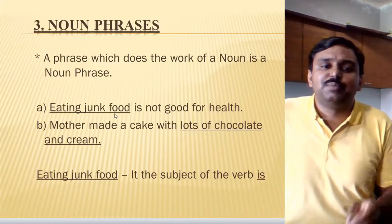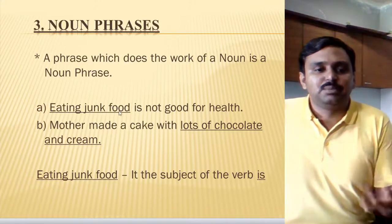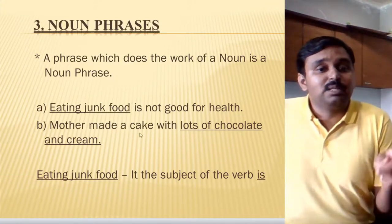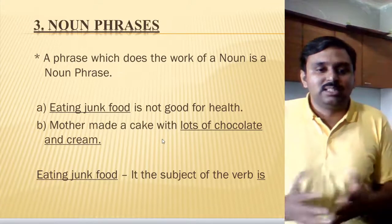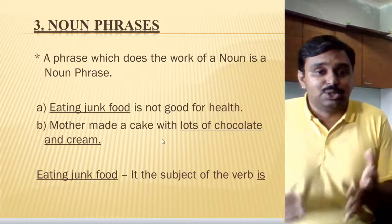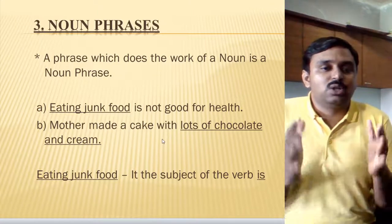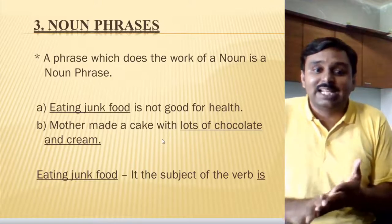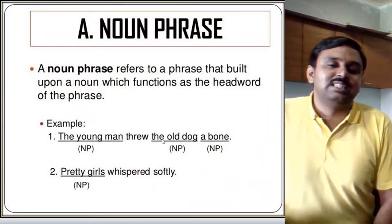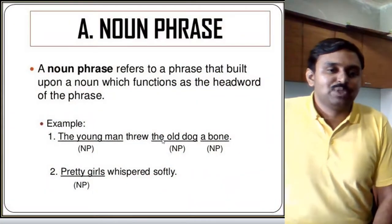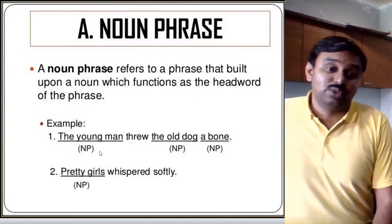Another example: 'Mother made a cake with lots of chocolate and cream.' Here chocolate and cream are both nouns, so 'with lots of chocolate and cream' is not describing an action or adjective but is carrying nouns itself, which is a noun phrase. This image will explain more about this. Look at the example: 'the young man' — young and man are both nouns, so it is also an example of a noun phrase.